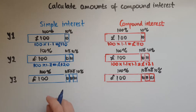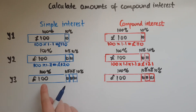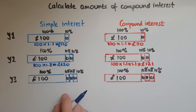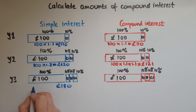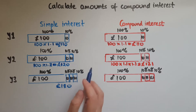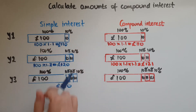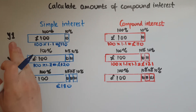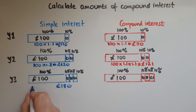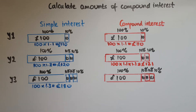Looking at year three for simple interest, we again just add ten pounds on top, so it's a hundred plus ten plus ten plus ten, giving a hundred and thirty pounds. That's the same as adding thirty percent to the initial hundred — so a hundred times one point three gives us one hundred and thirty pounds.